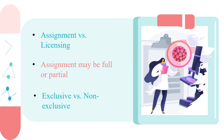For both parties — the patent holder and the patent buyer — it is important to decide whether they want to enter into a patent licensing or patent assignment relationship. Patent licensing is a transfer of rights for a specific period of time, whereas assignment is a permanent transfer of rights. Please note that assignment can be full or partial; the patent holder may transfer ownership of the patent fully or only a part of it, keeping the rest for himself.